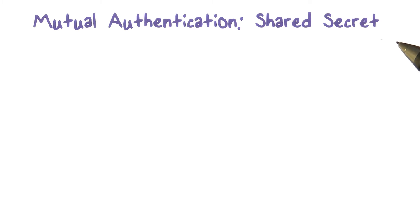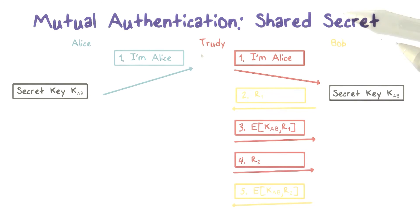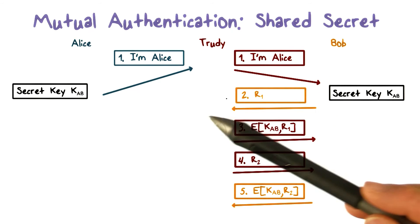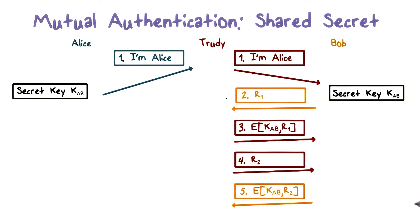We just discussed how challenge and response are used in authentication. It is very important for the challenges, say R1 and R2, to be not easily repeatable or predictable. Otherwise, an intruder such as Trudy can record the challenge and response between Alice and Bob and replay them to impersonate Alice or Bob. For example, an intruder called Trudy wants to impersonate either Alice or Bob.